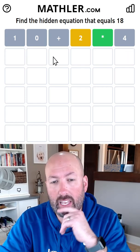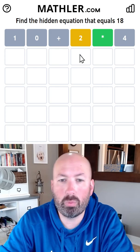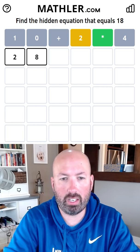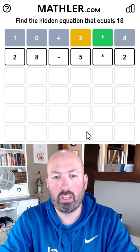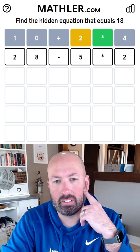We could do something like 28 minus 2 times 5. That doubles up the 2. Oh, and we can't do a 2 here. Oh, minus 5 times 2, then we could do that. So 28 minus 5 times 2. It doubles up the 2. It's probably not correct, but let's try it anyway.